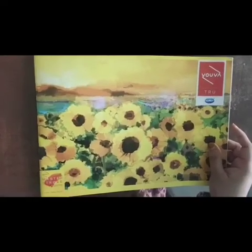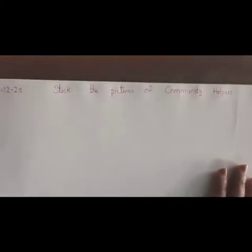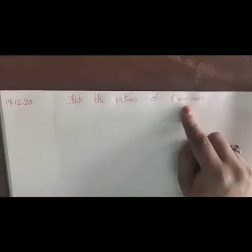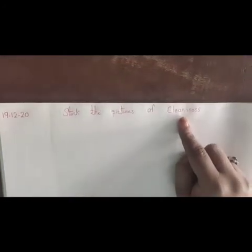This is your scrapbook. Open and take a new page. Write the date: 19-12-20. And stick the pictures of community helpers on this page. Turn the page, write the date again: 19-12-20. Stick the pictures of cleanliness. So this is your activity in GK.